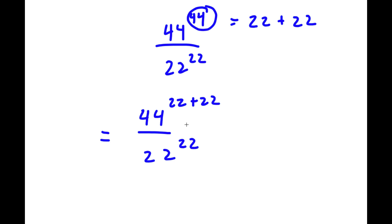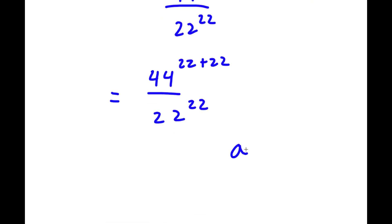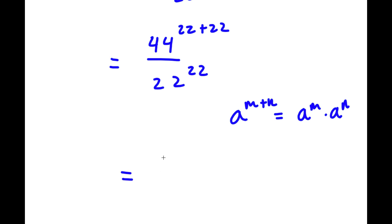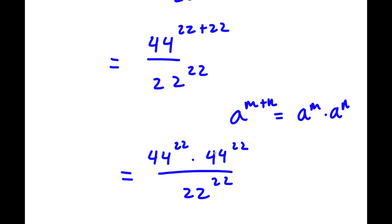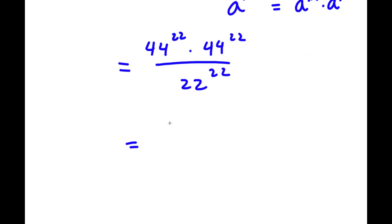If I have something in the form a to the power of m plus n, this is equal to a to the power of m times a to the power of n. So in this case, 44 to the power of 22 plus 22 equals 44 to the power of 22 times 44 to the power of 22. And now I have this over 22 to the power of 22. This is the same thing as 44 to the power of 22 over 22 to the power of 22, times 44 to the power of 22.